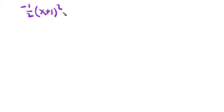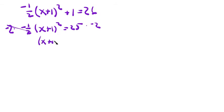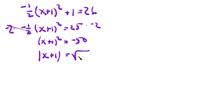Let's do one more — with fractions, everybody's favorite. We have negative one-half times the quantity x plus 1, squared, plus 1 equals 26. First, subtracting 1 from both sides gives negative one-half times the quantity x plus 1, squared, equals 25. Then we multiply both sides by negative 2: negative 2 times negative one-half is just 1, so x plus 1, squared, equals negative 50. We take the square root of both sides to get the absolute value of x plus 1 equals the square root of negative 50.